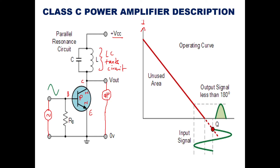Looking at the output characteristics graph: the Y-axis represents collector current IC and the X-axis represents collector-emitter voltage. This is the AC load line. The operating point is taken below the X-axis. Because the operating point is below the X-axis, if you superimpose the complete input cycle, the output will come for less than 180 degrees — less than half cycle.